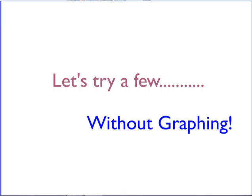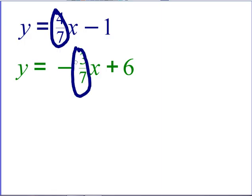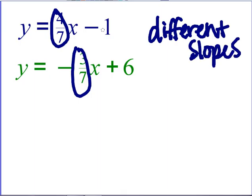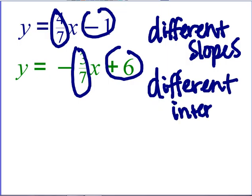So let's try a few without graphing. I don't want to solve, I don't want to graph, so I'm going to try this just a little bit differently than what we've done in the past. Notice how both of these equations are in slope-intercept form — that's what I want to look for. Notice how their slopes — sorry, that's a negative three-sevenths — but their slopes are different. So we have different slopes, and how about their y-intercepts? They also have different intercepts. So if I have different slopes and different intercepts, what kind of system was that? This was a one-solution system.